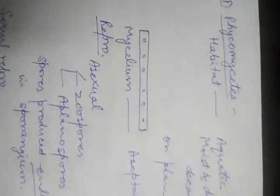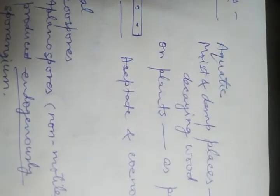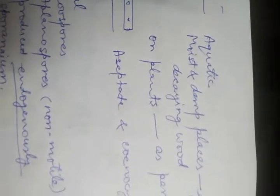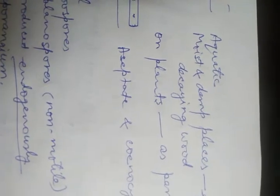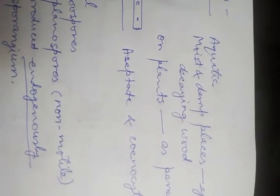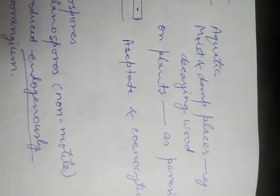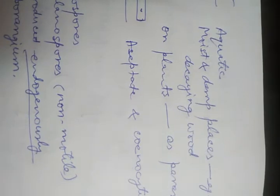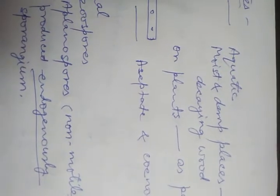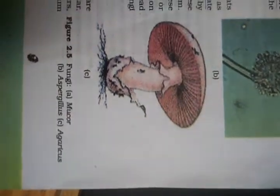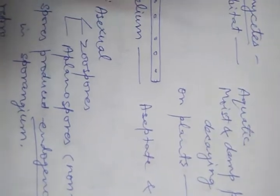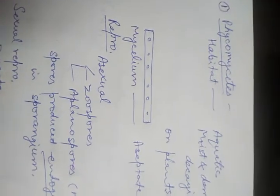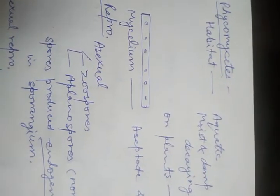The habitat of Phycomycetes is aquatic — they may be found in water. They are also found in moist and damp places, such as on soil, wood, brick, or stones. Decaying wood is a very well-known place for growth of this kind of fungi. On decaying logs of wood you will see umbrella-like small white or sometimes blackish structures.